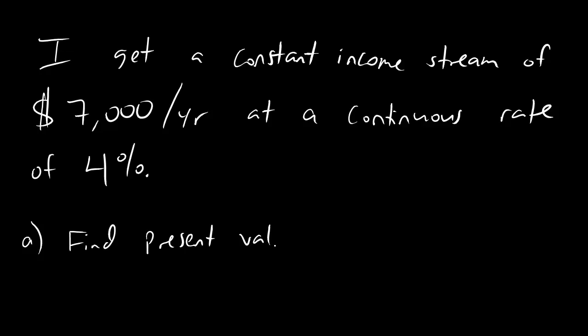It might say something like: I get a constant income stream of $7,000 per year at a continuous rate of 4%. Find the present value.